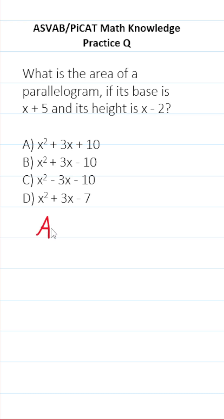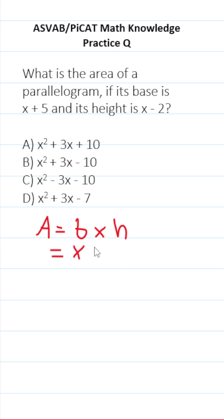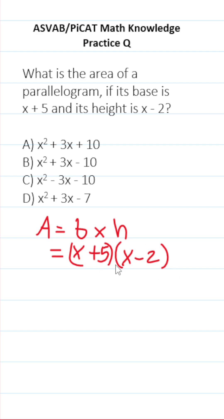The formula to find the area of a parallelogram is simply base times height. In this case, we know both of these things. According to the problem, its base is x plus 5 and its height is x minus 2. So we're just going to multiply these two polynomials together.